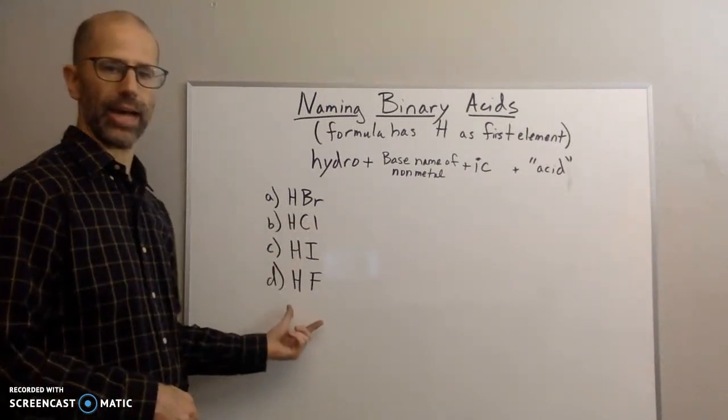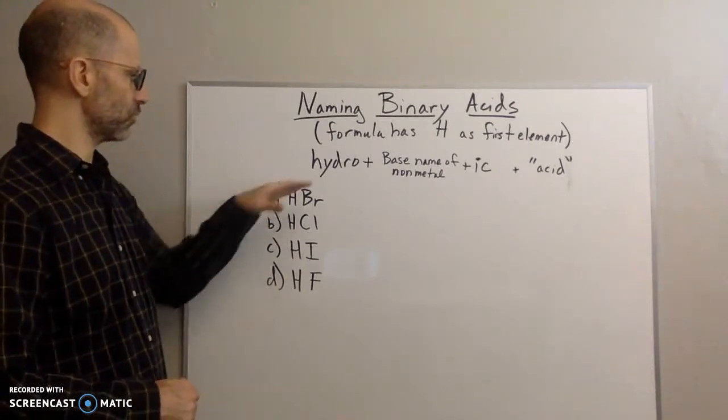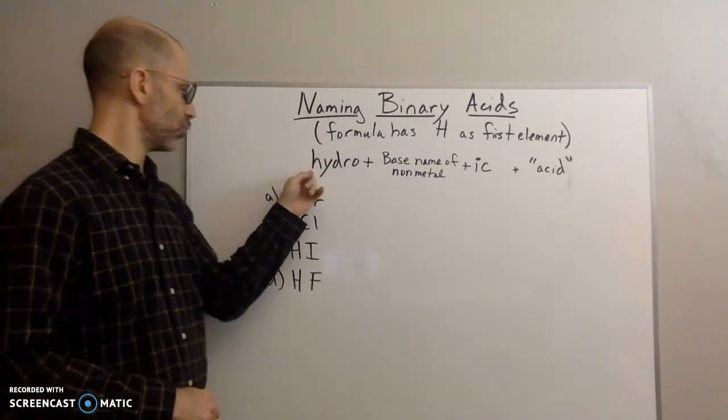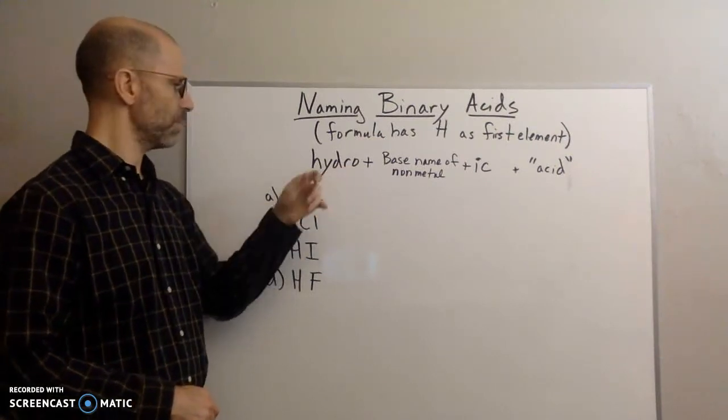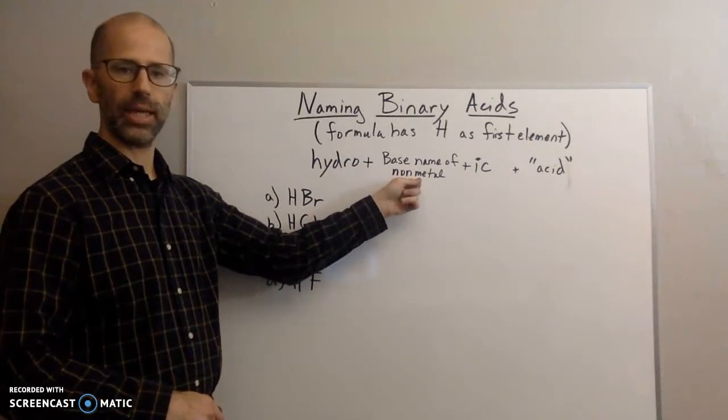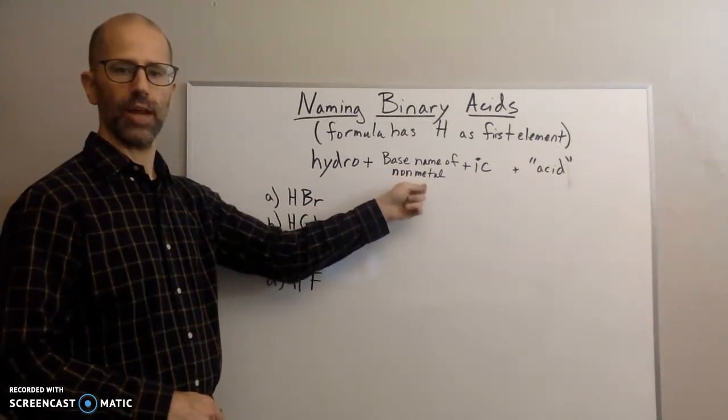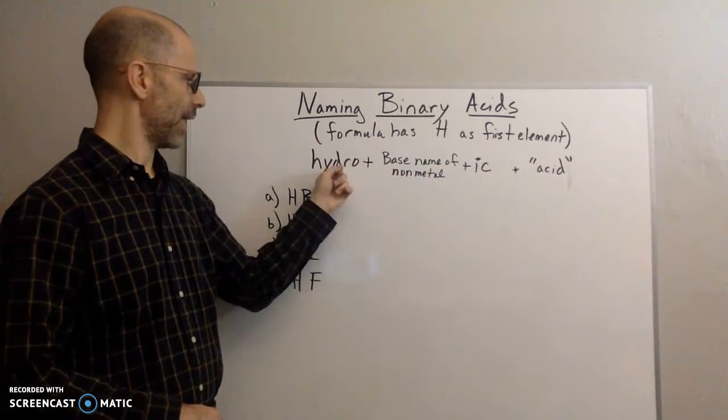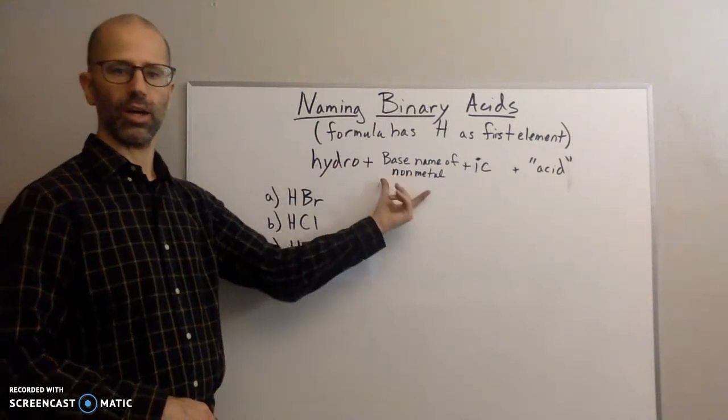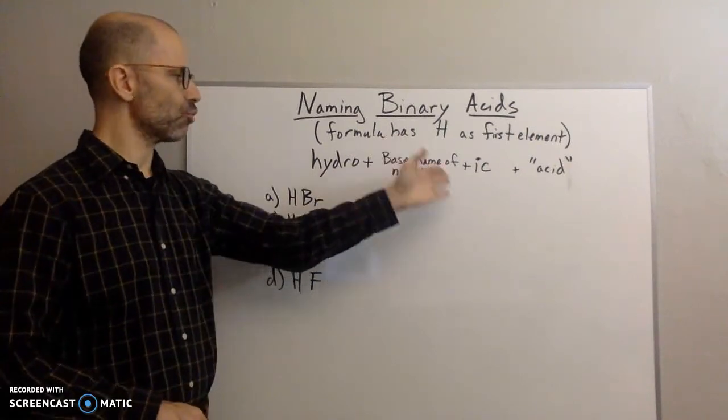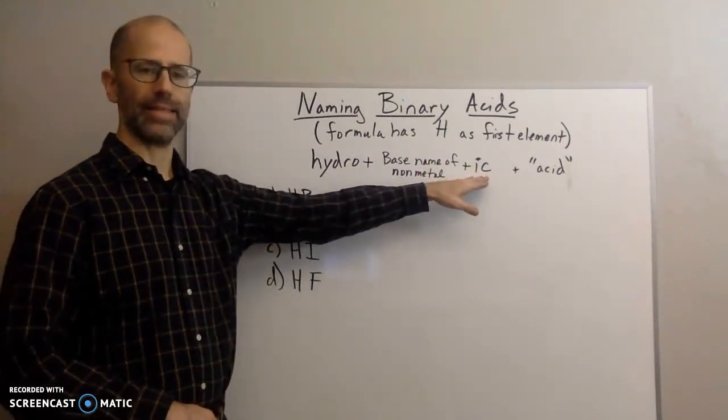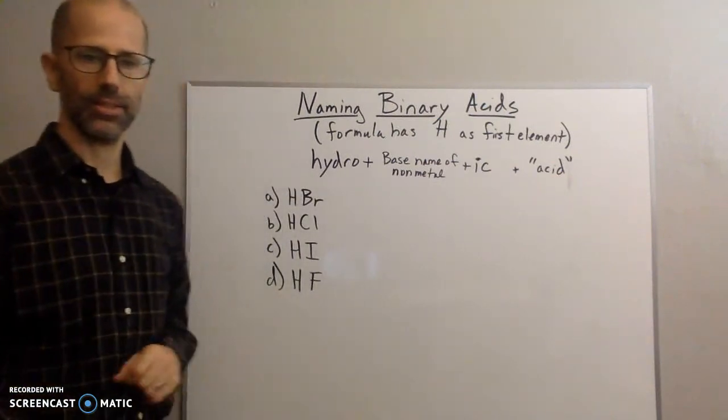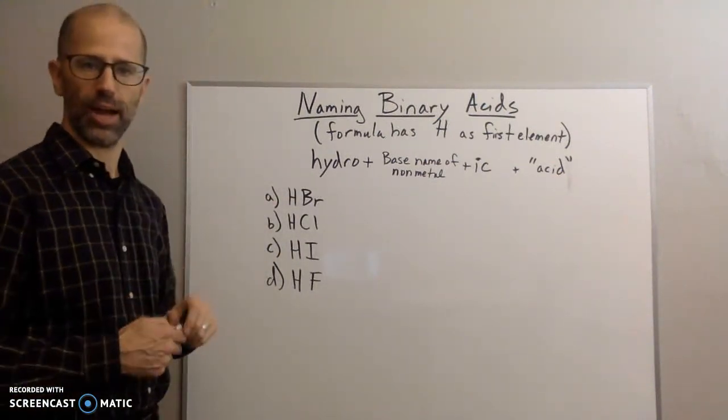So all of these are binary acids. So how do you name these? Well, the way you name your binary acid is you first have hydro. You're going to add hydro to the beginning of the non-metal. So here I have bromine. So I would add hydro to the beginning of the word bromine. I'm going to drop the ending and add I-C, ick. And then at the end, I add the word acid. So let's go through an example so you can see what I am talking about.